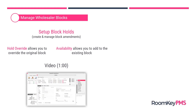When you're setting up the block for the first time, using the amendments button and block holds is recommended because you can hold one or two rooms across several dates. The nice thing about the block holds option is that it gives you the ability to do it across date ranges, which is very efficient when first setting up your wholesaler accounts and blocks inside Roomkey.